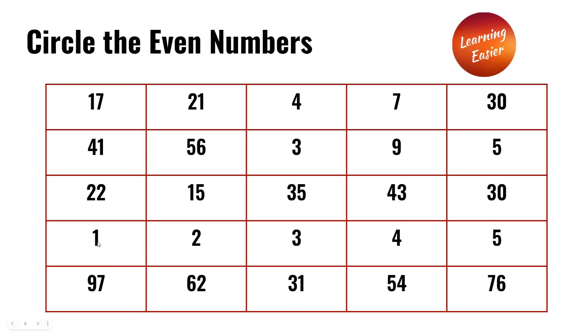In the fourth row we have 97, 62, 31, 54, and 76. The even numbers here are 62 and 76.